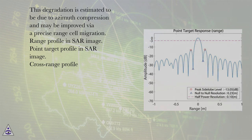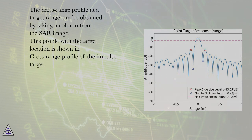Range profile in SAR image. Point target profile in SAR image. Cross range profile. The cross range profile at a target range can be obtained by taking a column from the SAR image. This profile with the target location is shown. Cross range profile of the impulse target.